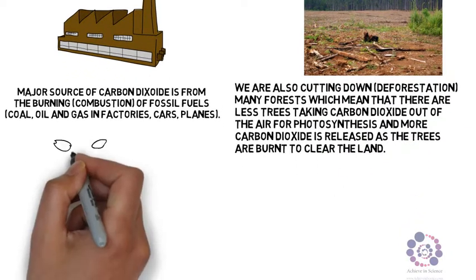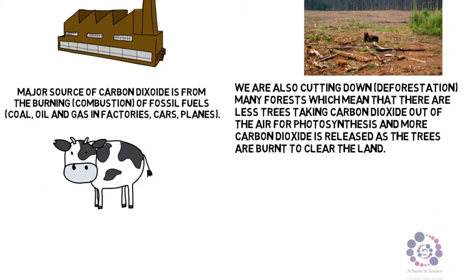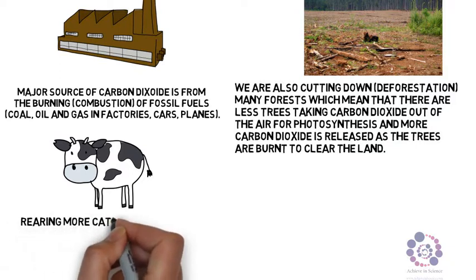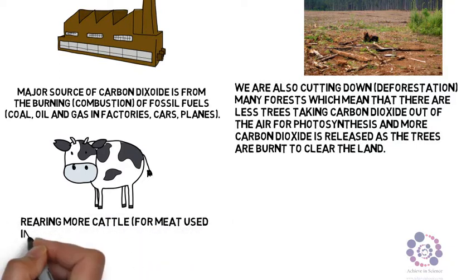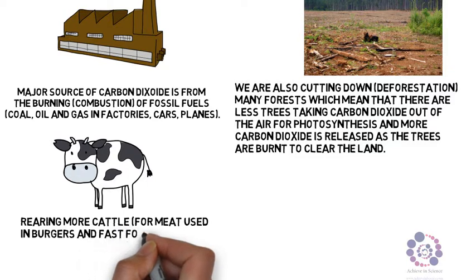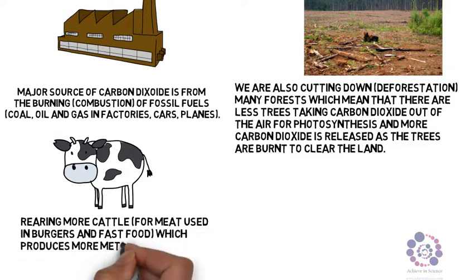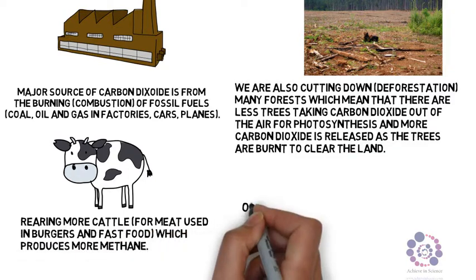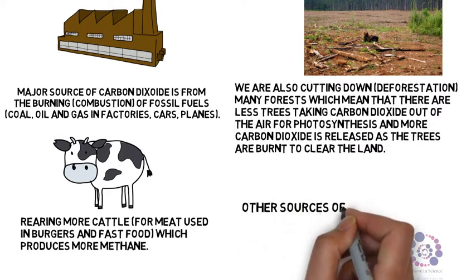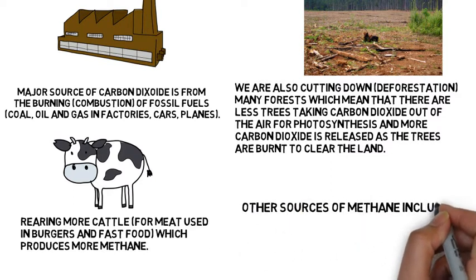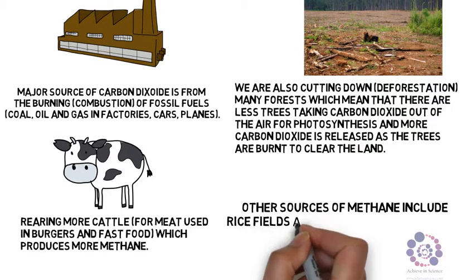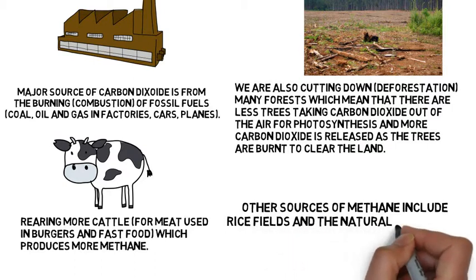As our population grows, we rear more cattle for meat used in burgers and fast foods. These cattle produce methane, another greenhouse gas, and will increase the amount of methane in our atmosphere. Other examples of methane can be from rice fields and natural production from marshlands, decomposition of waste and rotting plants.